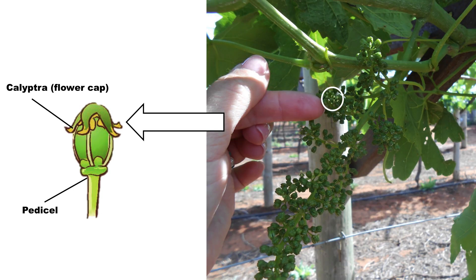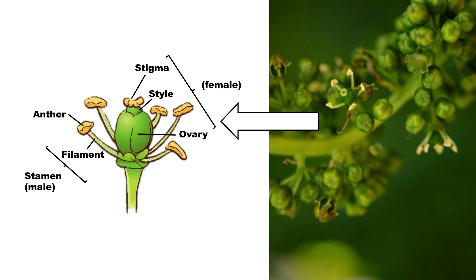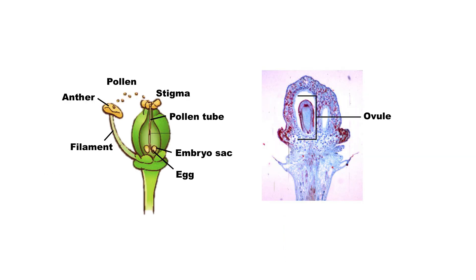Grape flowers are hermaphroditic, meaning that they have both male and female organs. The male part of the flower consists of pollen-producing anthers. The female parts comprise the stigma, style and an ovary with four ovules. Each ovule has an embryo sack containing an egg.